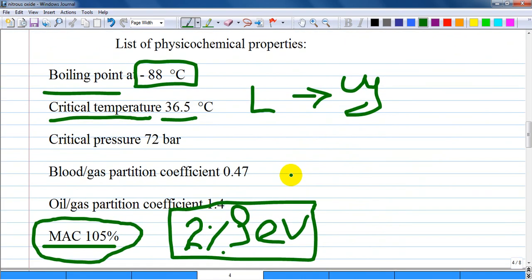Important physico-chemical properties include boiling point, critical temperature, critical pressure, partition coefficients (blood-gas, oil-gas), and MAC. Key values: boiling point is minus 88 degrees Celsius, critical temperature is 36.5 degrees Celsius. It is stored in liquid phase in a cylinder, but at temperatures greater than this it converts to gas phase.